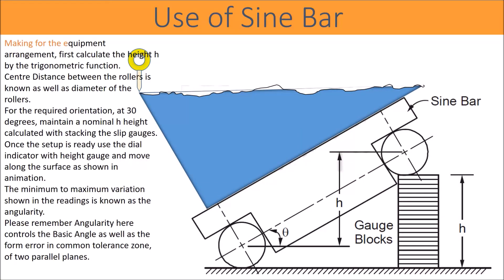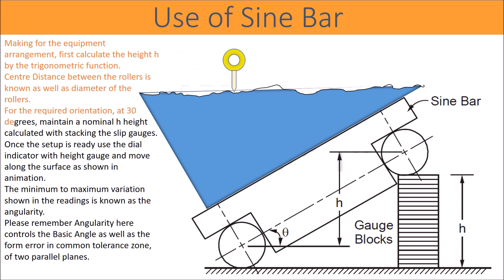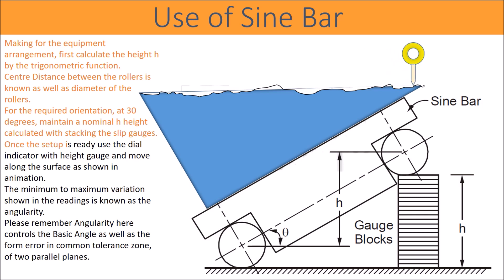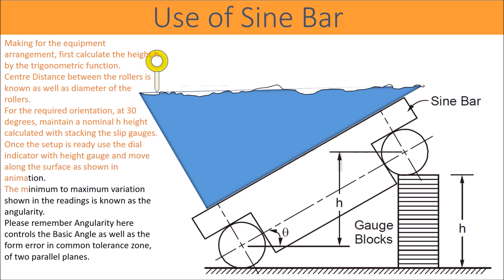For the equipment arrangement, first calculate the height h by the trigonometric function. The center distance between the rollers is known, as well as the diameter of the rollers. For the required orientation at 30 degrees, maintain a nominal h height calculated by stacking slip gauges. Once the setup is ready, use the dial indicator with a height gauge and move along the surface as shown in the animation. The minimum to maximum variation shown in the readings is known as the angularity.